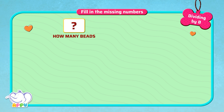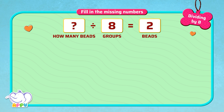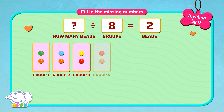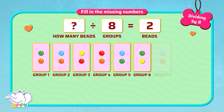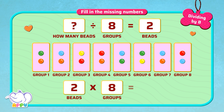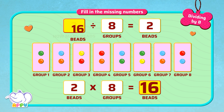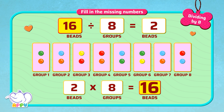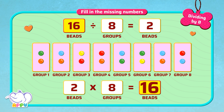We have to find out how many beads, when divided into 8 groups, gives us 2 beads. We know that 2 beads in 8 groups equals 16. How do we do this? We use multiplication that we learned earlier. 2 times 8 equals 16. So the answer is 16. 16 divided by 8 equals 2. We write it as 16 by 8 equals 2.